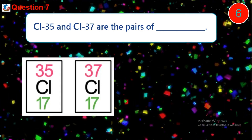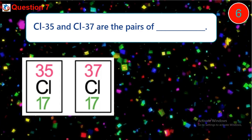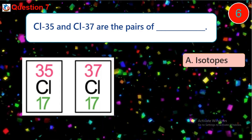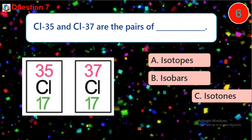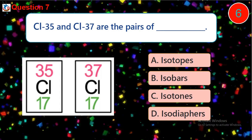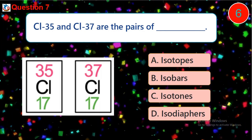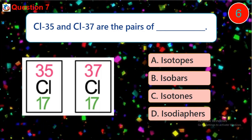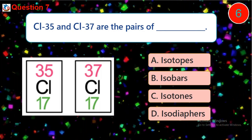Question seven: Cl-35 and Cl-37 are examples of dash. A. isotopes, B. isobars, C. isotones, D. isodiaphers.